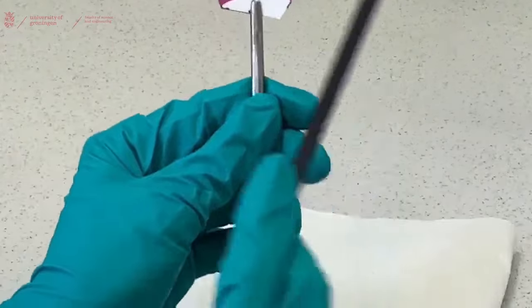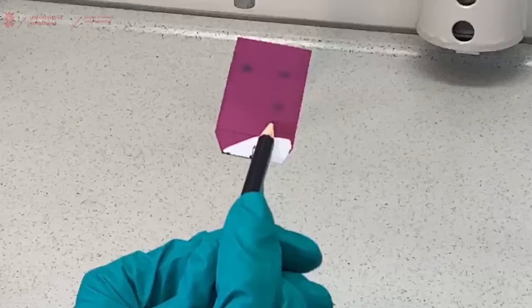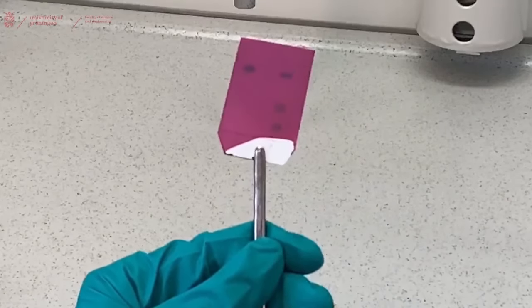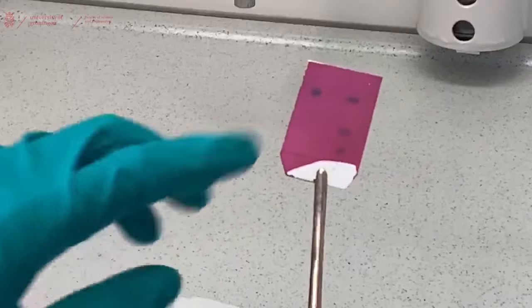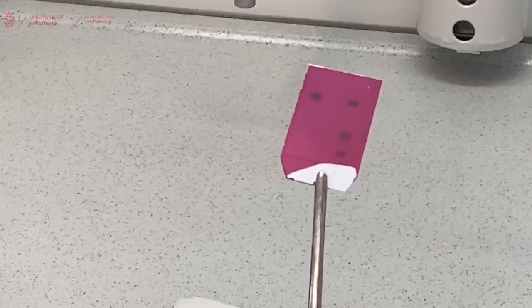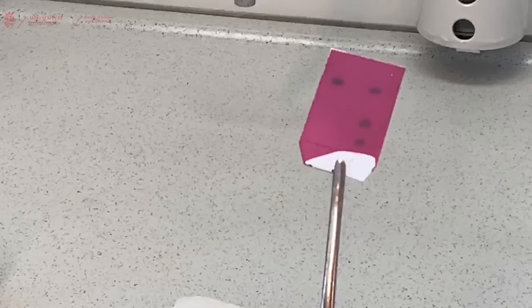Now we see that there is one more spot in the bottom of our product. And we circle that spot as well. Keep in mind that when using this technique you have to be careful with your TLC plate, because stains are often toxic and required to be handled with care. This is how you can analyze reactions using TLC.